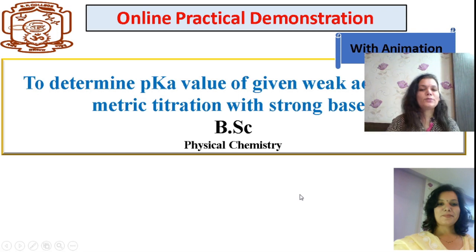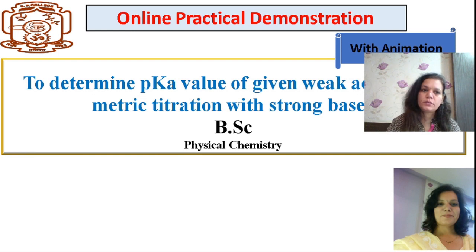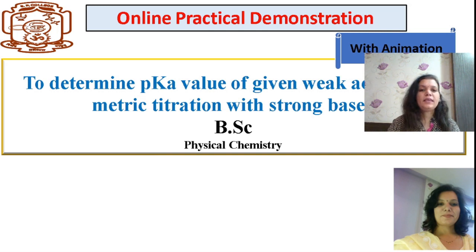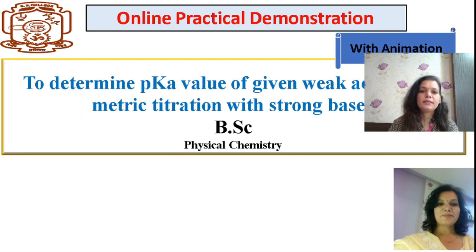Welcome back to Dr. Sucheta's interactive class. Today we will see an online practical demonstration for an experiment based on pH metric. We are going to determine the pKa value — that is, the dissociation constant of a weak acid — by pH metric titration with a strong base.